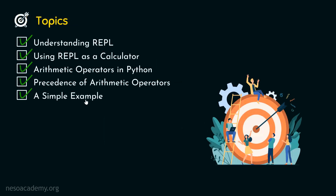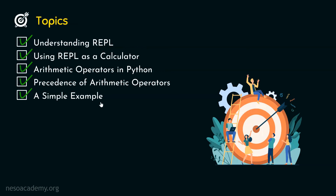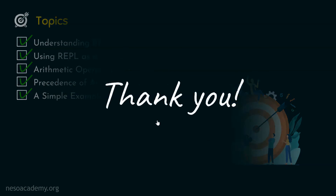We are done with all the topics. We have understood what REPL is, used REPL as a calculator, seen different types of arithmetic operators in Python, understood what precedence is and how it works, and demonstrated the precedence of arithmetic operators through a simple example. This concludes the presentation. Thank you for watching.